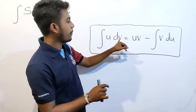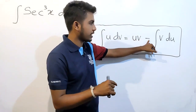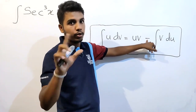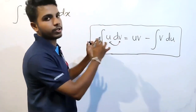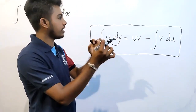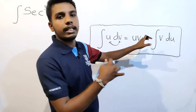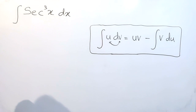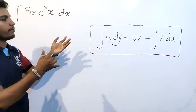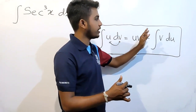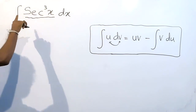If we have this kind of equation, we can write it like this. First, u multiplied by v — that is uv — then minus. Remember, it's a minus sign, not plus. Then we exchange this function: it becomes v du, which means v integrated with respect to u. So we can remember this equation: ∫u dv = uv − ∫v du.